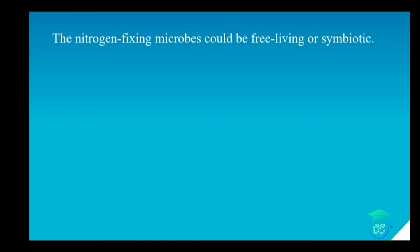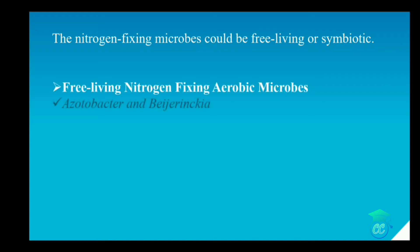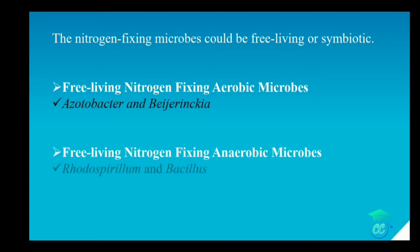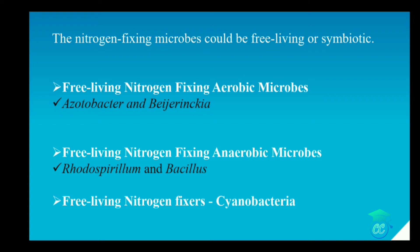In free living nitrogen fixers, they can be either aerobic or anaerobic. The example for free living nitrogen fixing aerobic microbes are Acetobacter and Azotobacter. The example for free living nitrogen fixing anaerobic microbes are Rhodospirillum and Bacillus. Also there are free living cyanobacteria nitrogen fixers such as Anabaena and Nostoc.